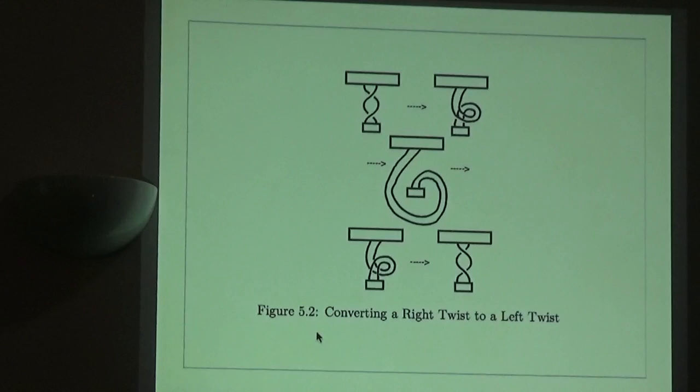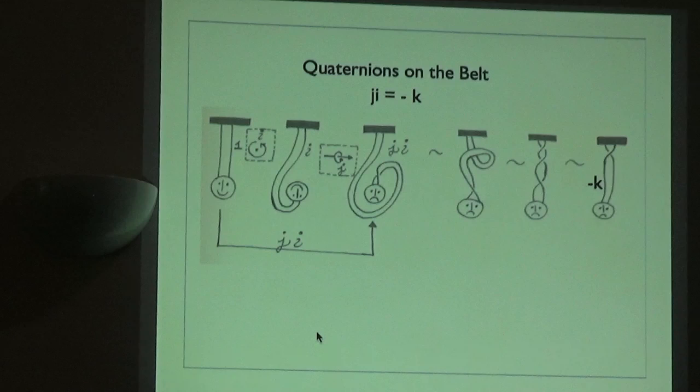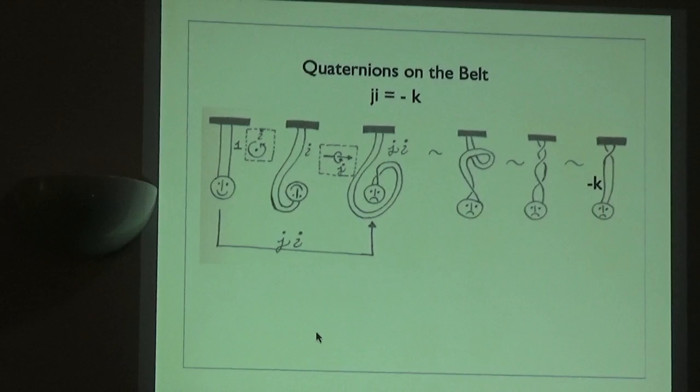But if you twist by 720 degrees, then you can get rid of it. And I didn't illustrate that, but it's easy enough to illustrate with a belt. And we can think about it here. Maybe we should do it. I have some equipment other than my belt that I forgot to bring up. It's a reason to do this.